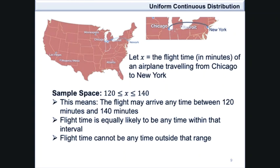Suppose that we have an example where we let x be the flight time in minutes of an airplane traveling from Chicago to New York, and the sample space of x is between 120 and 140 minutes. This means the flight may arrive any time between 120 and 140 minutes. The flight time is equally likely to be any time within that interval, and the flight time cannot be any time outside that range.